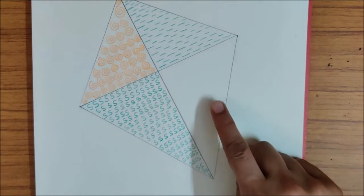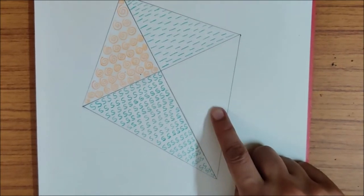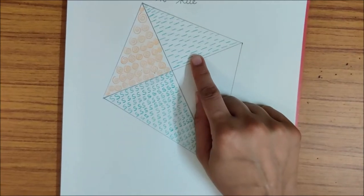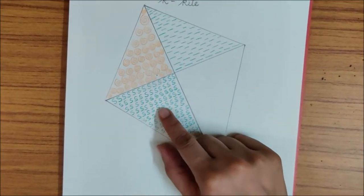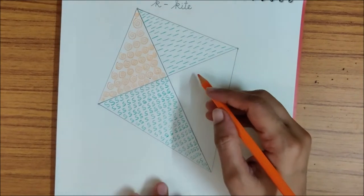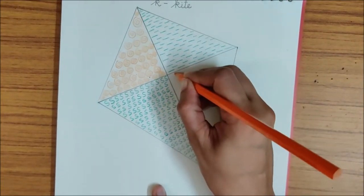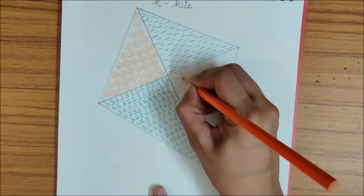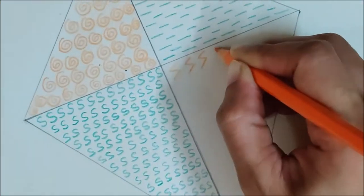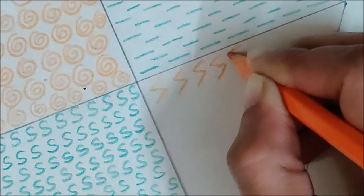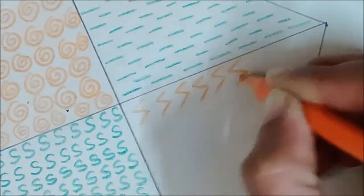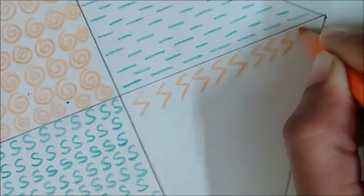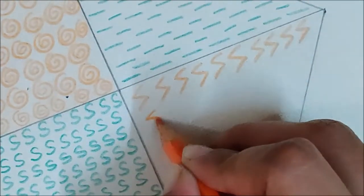Now only this box is left. So here we made orange Jalebi, green sleeping lines, green S. Now again, with orange color pencil, we will make zigzag pattern like this. Okay children, make zigzag patterns like this. Quickly, finish this.